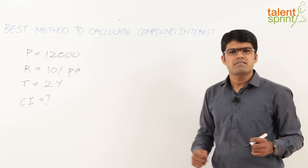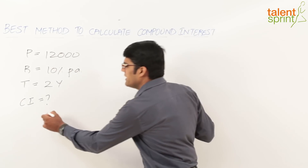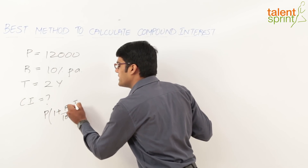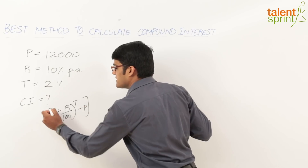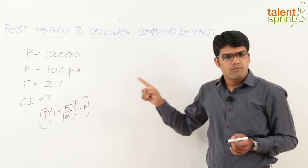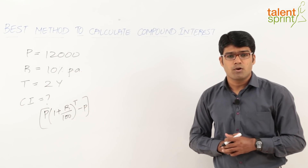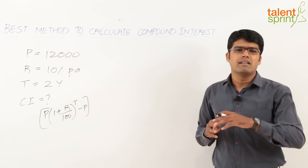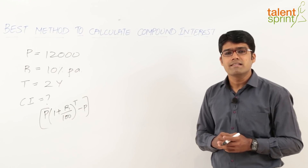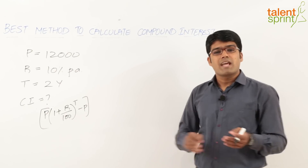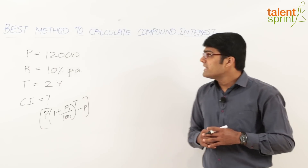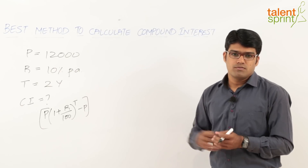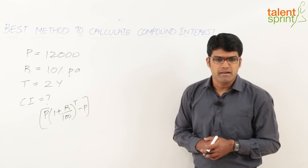The conventional method of calculating compound interest is to use the formula P × (1 + r/100)^t − P. But as you all must be aware, this is a little complex — the calculation is tedious and we end up wasting a lot of time. So let's look at an alternate method which is the best way of doing compound interest calculations.